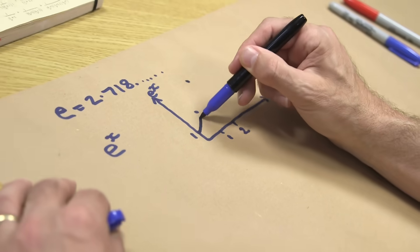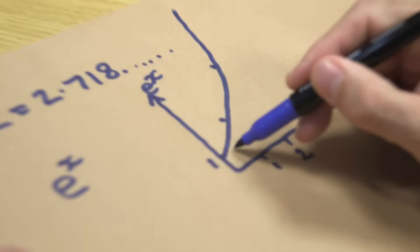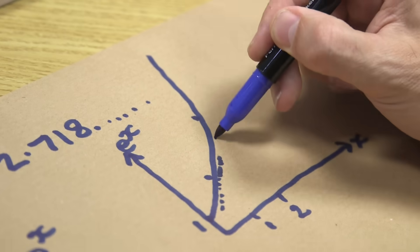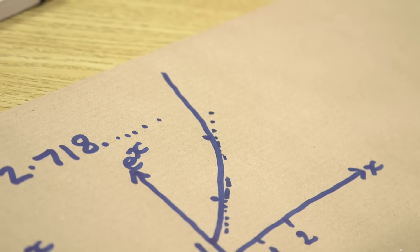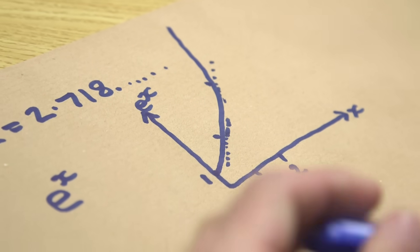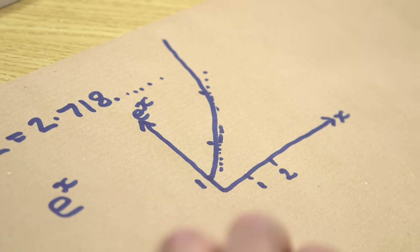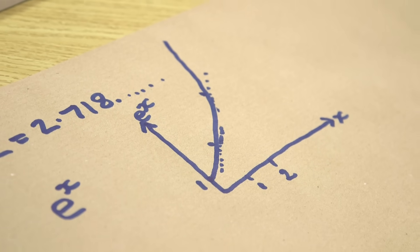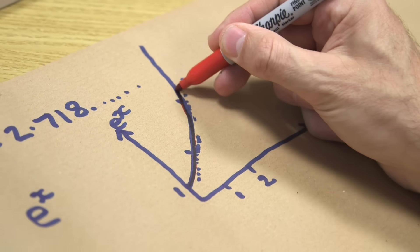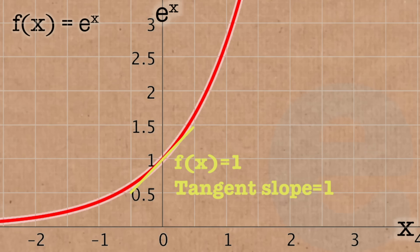Now I could ask the question: what's the slope of this function? A slope, as we learn at school, is drawing a tangent at any point — it will tell me the slope. So that would be the tangent at that point there, and this would be the tangent at that point there. And if I plot the tangent, I basically get this. So that's the tangent.